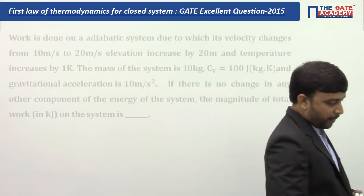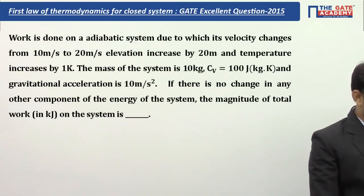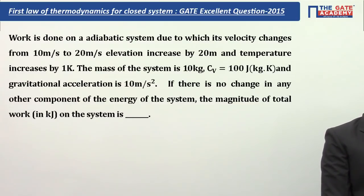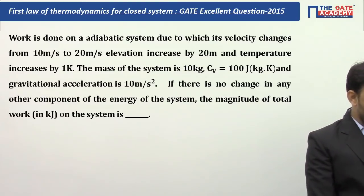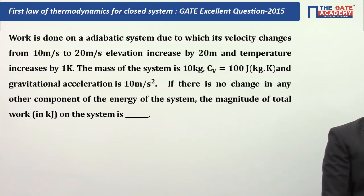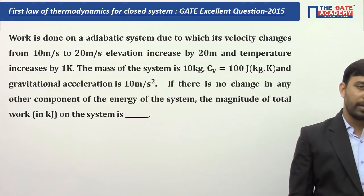The question is: work is done on an adiabatic system due to which its velocity changes from 10 m/s to 20 m/s, elevation increases by 20 meters, and temperature increases by 1 Kelvin. The mass of the system is 1 kg, Cv is 100 J/kg·K, and acceleration due to gravity is 10 m/s². If there is no change in any other components of energy, the magnitude of total work done in kilojoules on the system is?